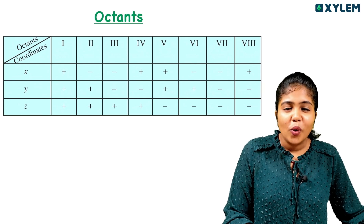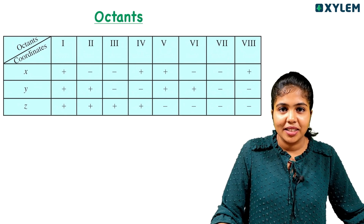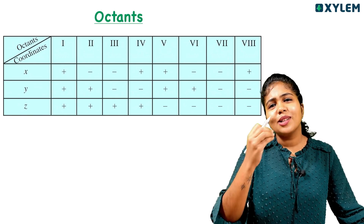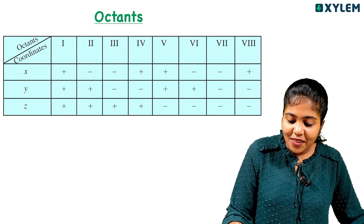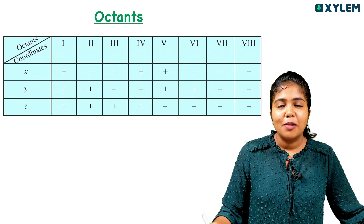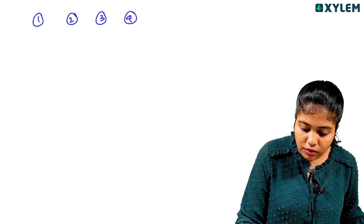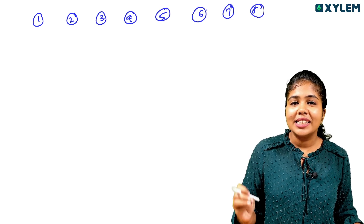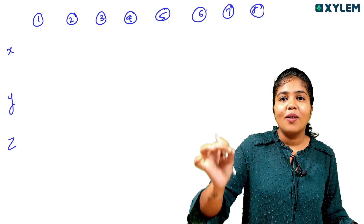Let's look at the octants table. We have 8 octants. The table has the sign of X, Y, and Z for each octant, because in a point there is a sign for X, Y, and Z. We will call them X, Y, Z. Now we will look at the first octant and build this table.